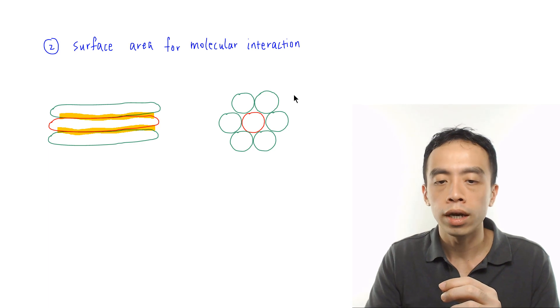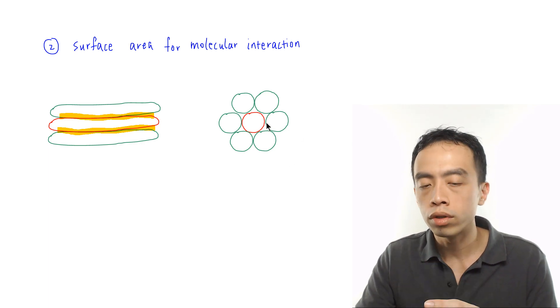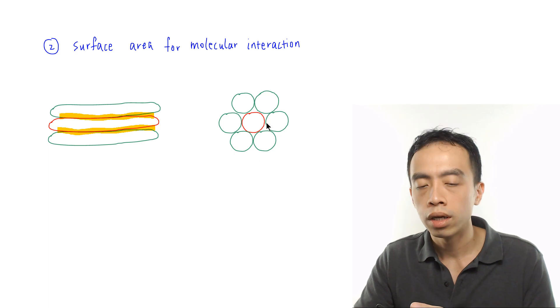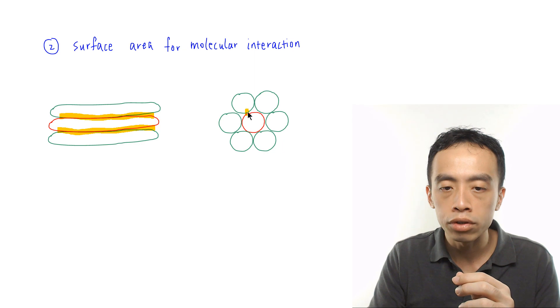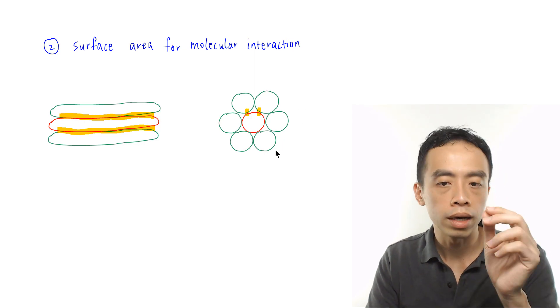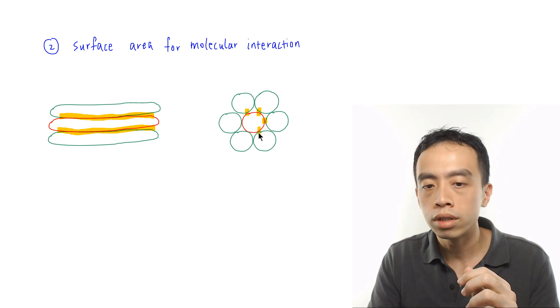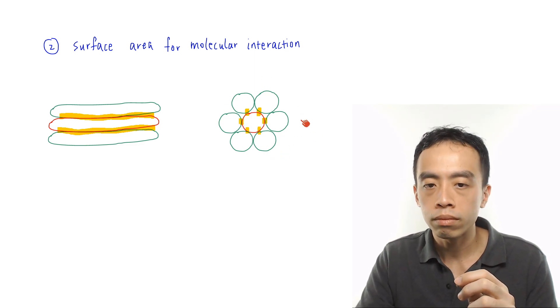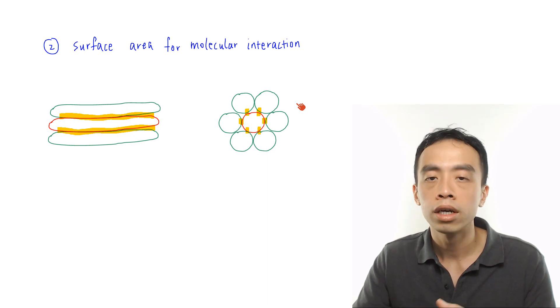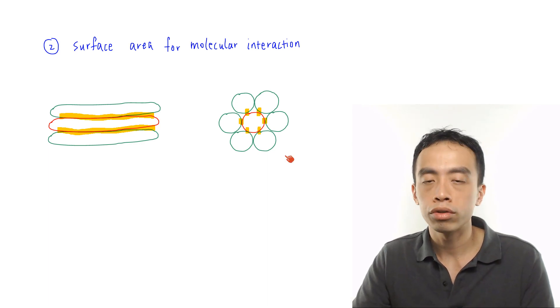For a spherical molecule, by virtue of its shape, interaction with each neighbor is minimal — just touching by a tiny amount. So the total interaction with neighbors is much less, and the IDID attraction between these molecules is weaker. That concludes the discussion of the factors affecting the strength of instantaneous dipole-induced dipole attraction between non-polar molecules.